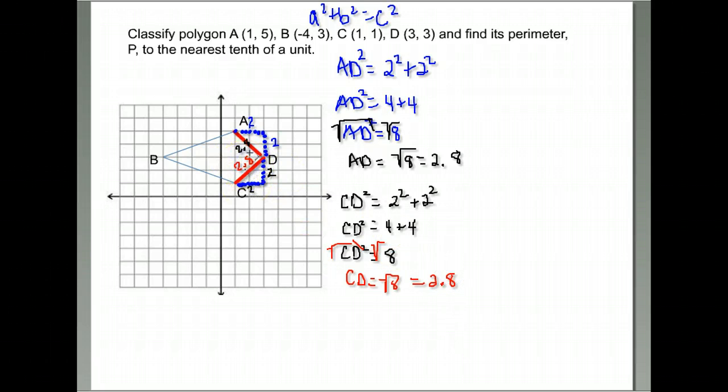So I can see AD and CD are the same length, which means this is starting to look like I could verify it as a kite. The only other thing I need to know is if these two are the same length. They have to be in order for this to be a kite. I'm going to draw a line here. I'm going to find the length of AB and the length of BC.